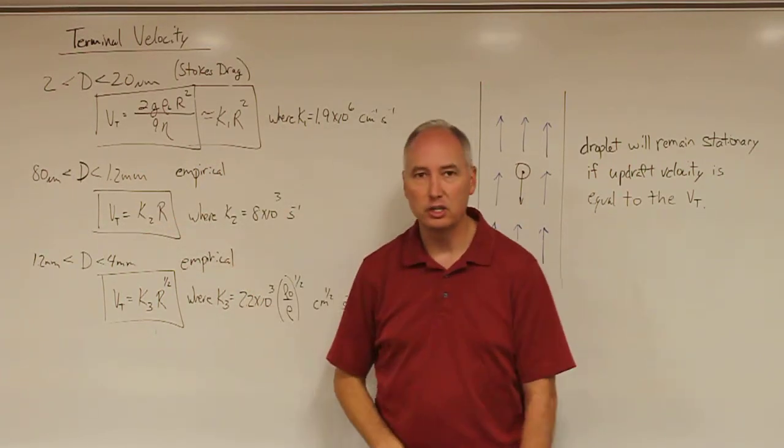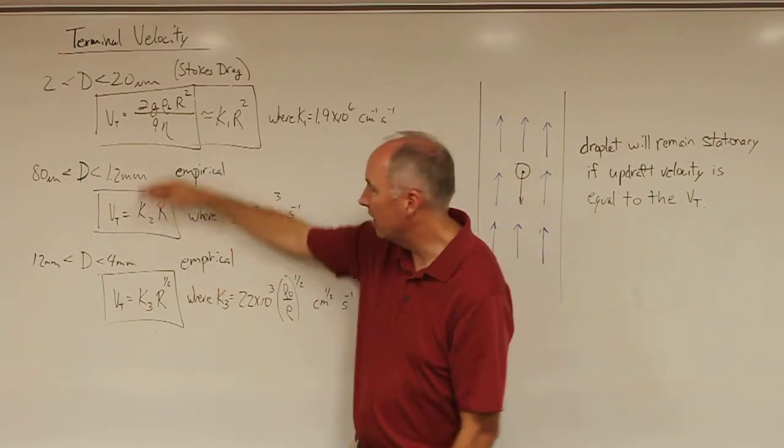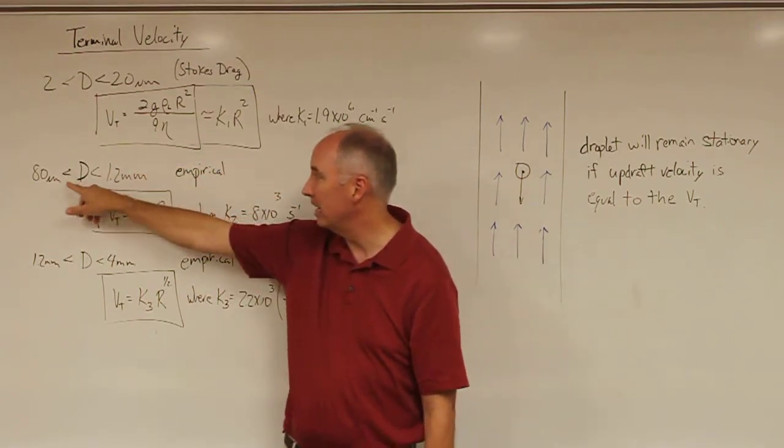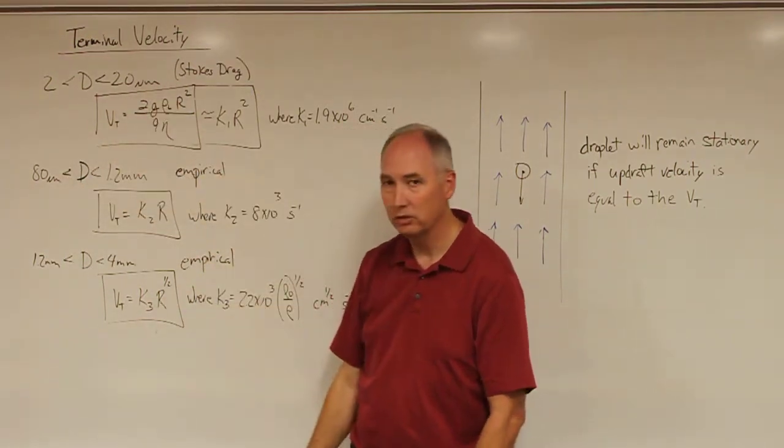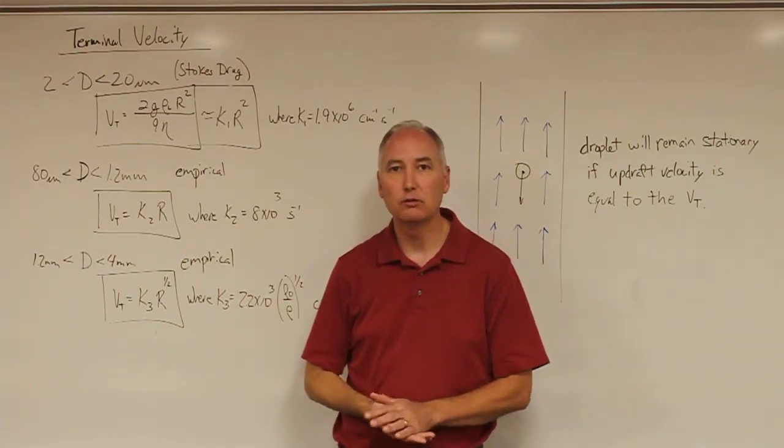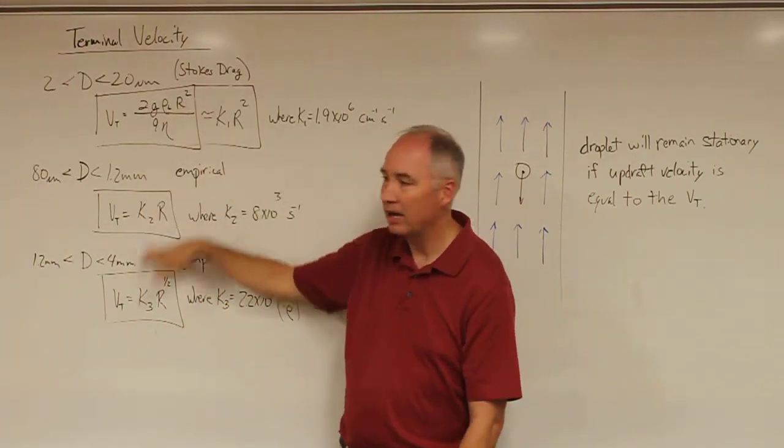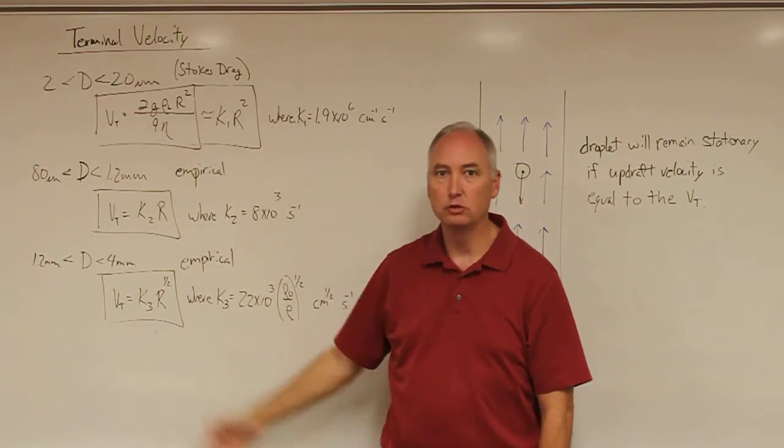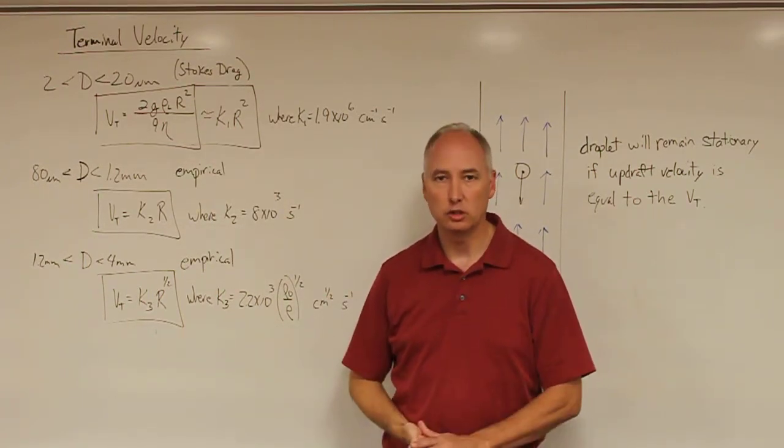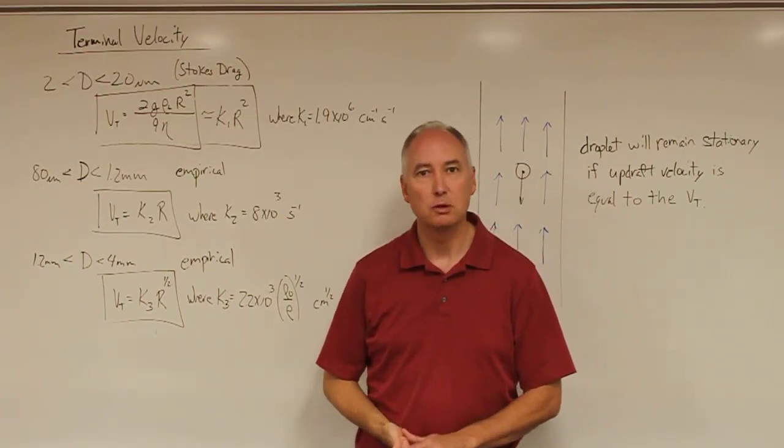They're both approximations that will converge in that range between 80 micrometers and 20 micrometers. But now we have a mathematical formulation for the terminal velocity for the entire range of droplets that we need in order to construct a model for the collision coalescence process.